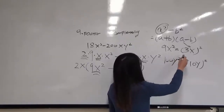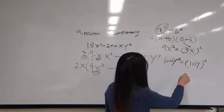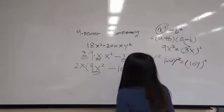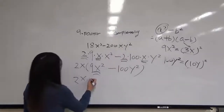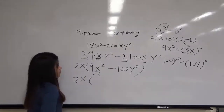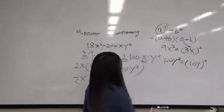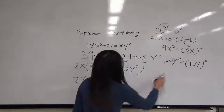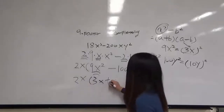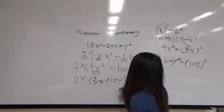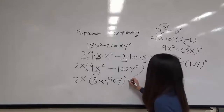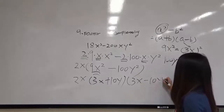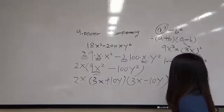So we have found our a and b, which are 3x and 10y. Now we are going to apply the formula. The formula says a plus b times a minus b. So our a is 3x and our b is 10y, giving us 3x plus 10y times 3x minus 10y. And that's all.